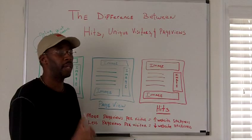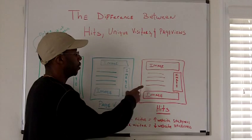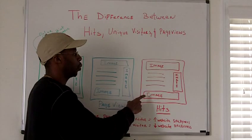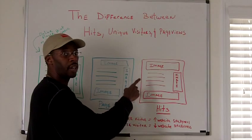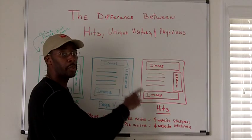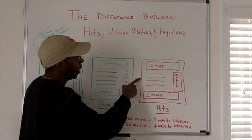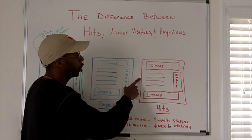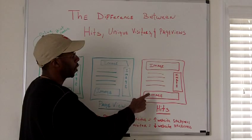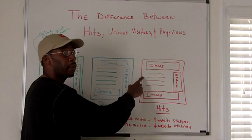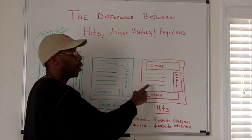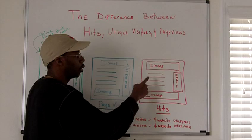Now if you look over here, the definition of a hit is when you have files on a web server and those files are being called to a browser. So here you have an HTML page and one, two, three images. All these elements are being called by the web browser and all those elements will be considered a hit.